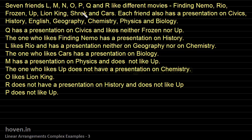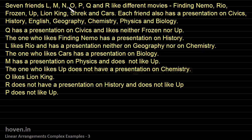Seven friends L, M, N, O, P, Q and R like different movies. The names of the movies are given. Each friend also has a presentation on civics, history, and other subjects. We have to allocate these friends to these movies and also to the subjects based on the given conditions.